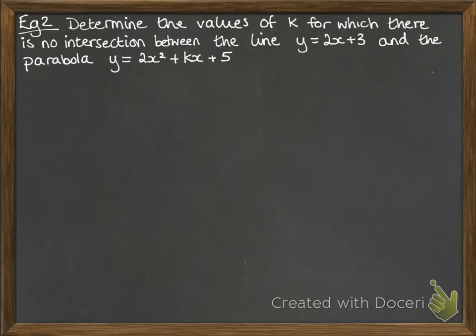Okay, another example. Determine the values of k for which there is no intersection between the line y equals 2x plus 3 and the parabola y equals 2x squared plus kx plus 5. Same situation, we're going to put them equal to each other, the two equations, and then we're going to work out how to get no intersection. So this is looking like this. So there's the line, there's the parabola.